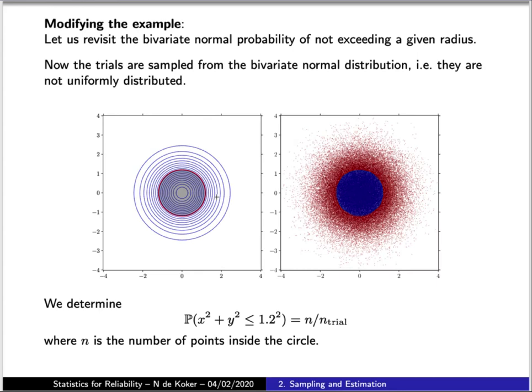Now, in this case, instead of the x and y values being uniformly distributed, the pairs have the bivariate normal distribution. So what we do is we sample a million pairs of x and y values from that distribution and then for each pair look at whether it's inside or outside of the circle and by determining the fraction of values inside the circle we can calculate the probability associated with that circle in the context of the bivariate distribution that we have.